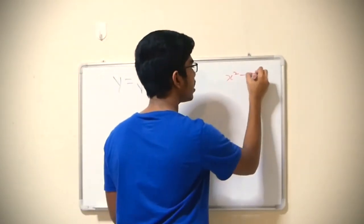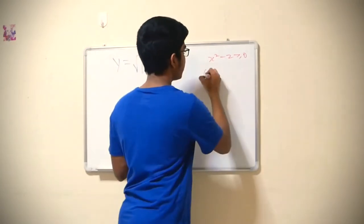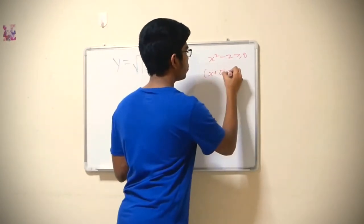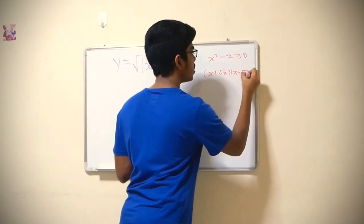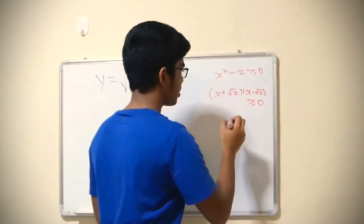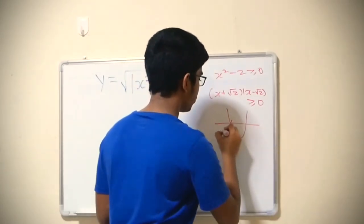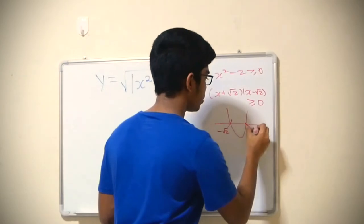x squared minus 2 greater than or equal to 0. This is very simple—a squared minus b squared. So you get (x plus root 2)(x minus root 2) is greater than or equal to 0. Then you use the number line and say this is minus root 2, this is positive root 2.